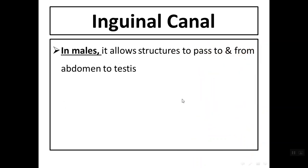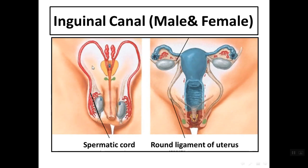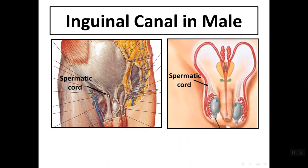In males, the inguinal canal allows structures to pass to and from the abdomen to the testes. In females, it allows the round ligament of the uterus to pass from the uterus to the labia majora. This drawing shows the spermatic cord passing through the inguinal canal to the testes in the male, and the round ligament passing through the inguinal canal to the labia majora in the female. The inguinal canal in males is more well-developed and longer than in females.